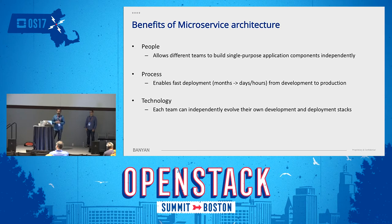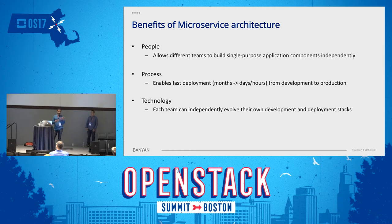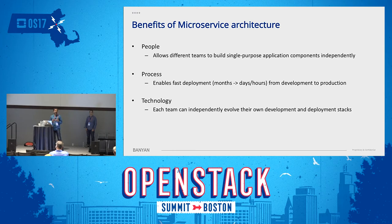To formalize the three high-level benefits, they fall into people, process, and technology domains. On the people side, it allows different teams to build their own single-purpose application component as fast as they can, completely independently — they just need to specify APIs with which others will interact. On the process side, it enables really fast deployments because people can tailor a single component to their needs. What used to take months now goes out in days, hours, or even minutes.